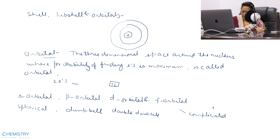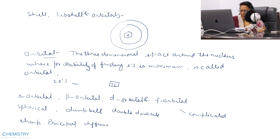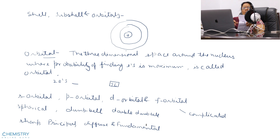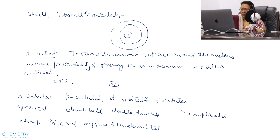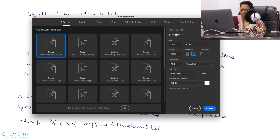S, P, D and F are spectral terms and signify sharp, principal, diffuse and fundamental respectively. Except the s orbital, all orbitals have directional character.